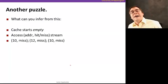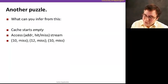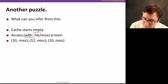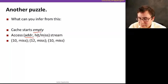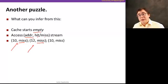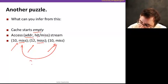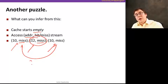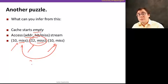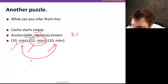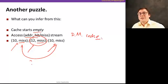Let's end with another puzzle. The cache starts empty. Access sequence: address 10 is a miss, address 12 is a miss, then address 10 is a miss again. But I just accessed 10 — what happened? When I accessed 12, it must have kicked 10 out, meaning 10 and 12 map to the same set. But since the cache was empty and 12 immediately displaced 10, this must be a direct-mapped cache. Have fun with this and with the assignments.